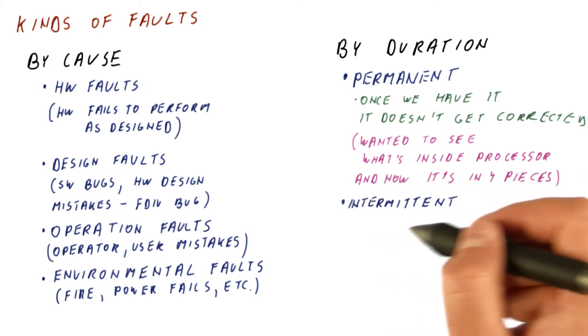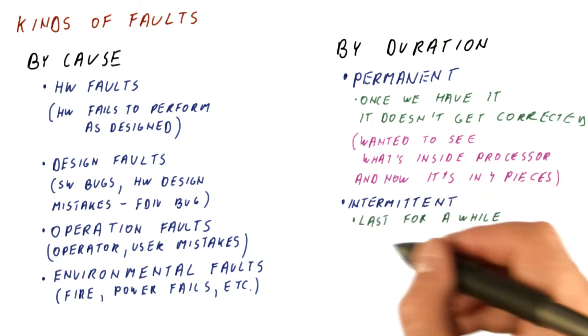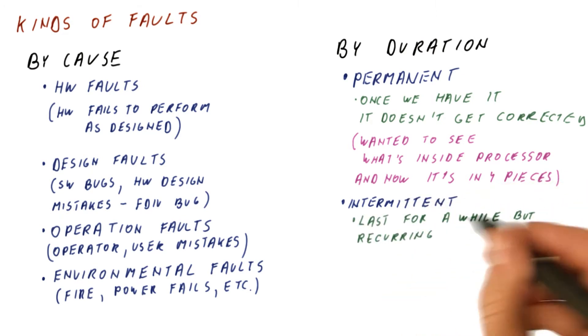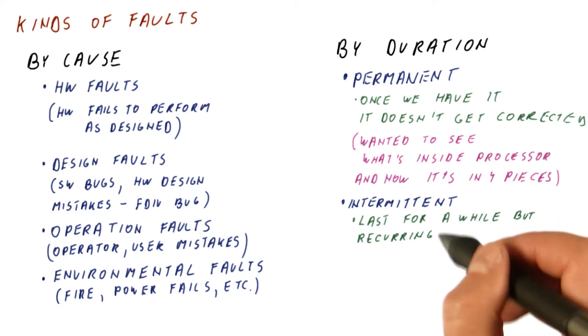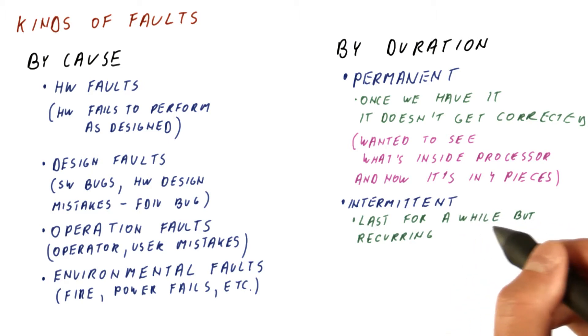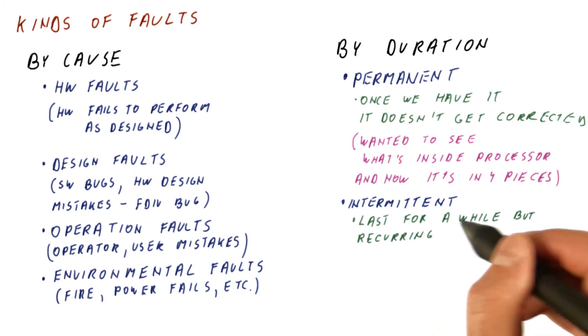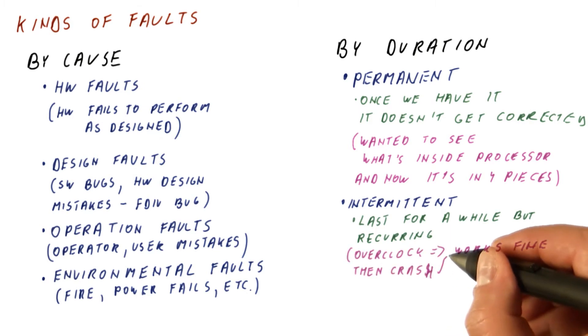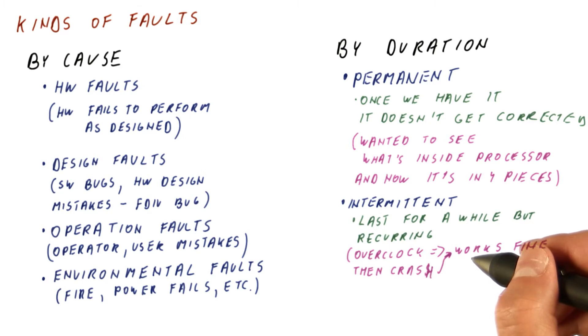We can have intermittent faults. They last for a limited duration of time, but they are recurring. So it's not like we get this type of fault and for a while it causes things to not work fine, but then it just disappears and never comes back. This is something like every couple of seconds something happens. A good example of intermittent fault is when we overclock our system. It works fine, then crashes, then we reboot it, it works fine, it crashes, and so on. So for a while it works fine, but then the same type of problem recurs.